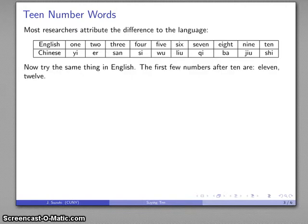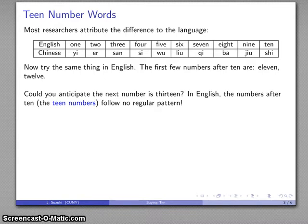Now try the same thing in English. After 10, the number is 11, 12. And on the basis of these two, can you predict what the number after 12 is going to be? And unlike in Chinese, there's no way to predict that the number after 12 is going to be called 13. And even if you knew that, you couldn't predict the number after that. In English, the numbers after 10, which are called the teen numbers, follow no regular pattern.